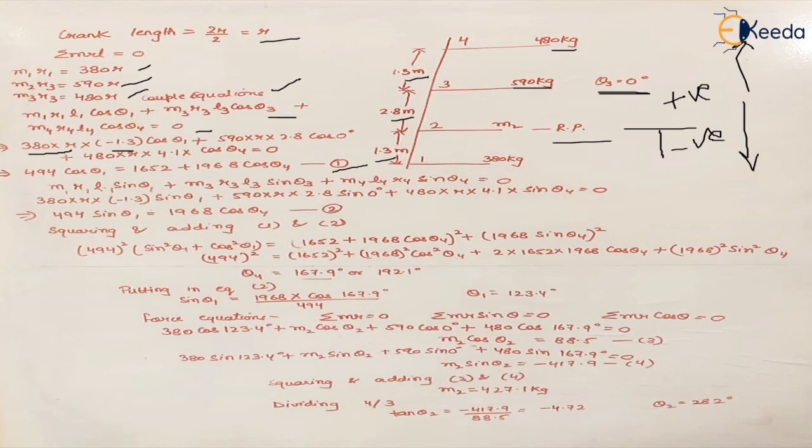For primary balancing, the primary forces and primary couples are balanced. If the primary couple is balanced, its vertical and horizontal components should be balanced. First we balanced the horizontal components. Now we balance the vertical components with the sine factor. This gives the second equation.